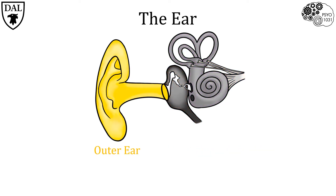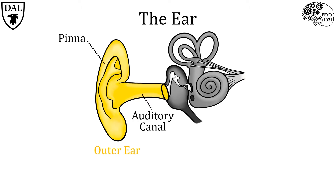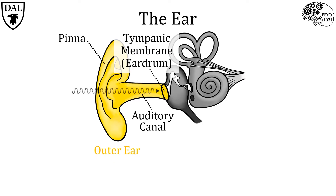The outer ear is on the outside of our heads — it's the part of the ear we can see. There are two main parts of the outer ear. The first part, the pinna, funnels sound waves into the second part, the auditory canal, which then further funnels those sound waves to the tympanic membrane, also known as the eardrum. The tympanic membrane is the division point between the outer and middle ear. When sound waves contact the tympanic membrane, it vibrates at a rate proportional to the properties of those sound waves.